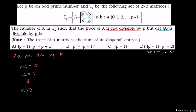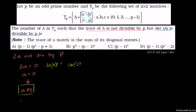So A cannot be equal to 0. Can 2A become any other multiple of P? If 2A equaled P, then 2 and A would be factors of P, and P would not be prime — so we can cross that out. And 2A can't equal 2P, that would make A equal to P, which is impossible because A can only be up to P minus 1. So the only constraint from the trace condition is that A does not equal 0.